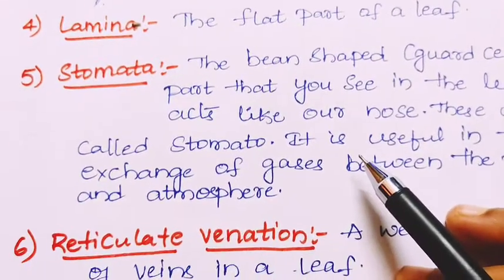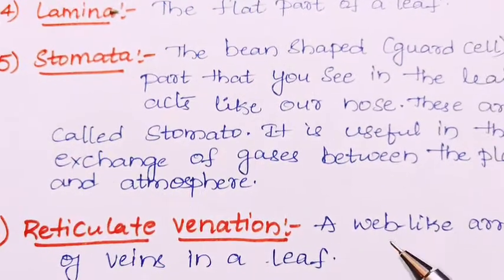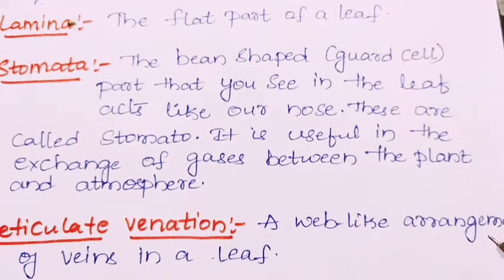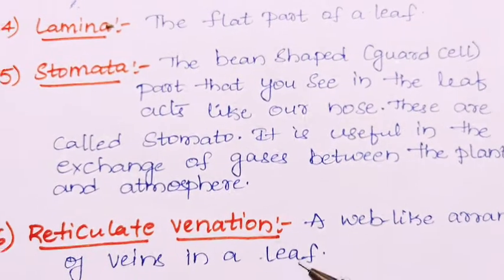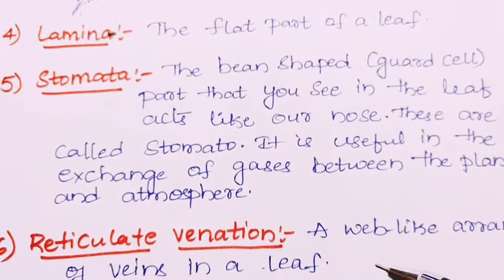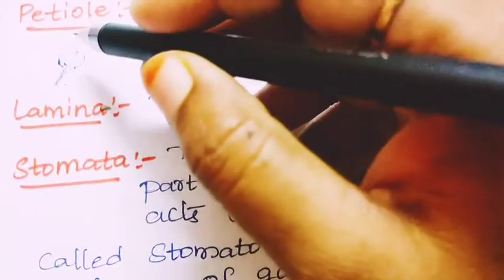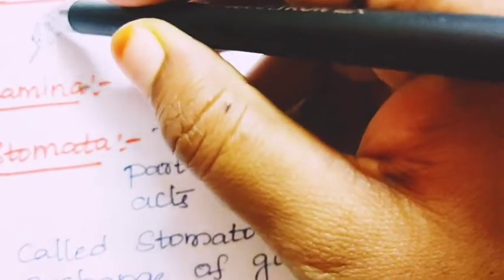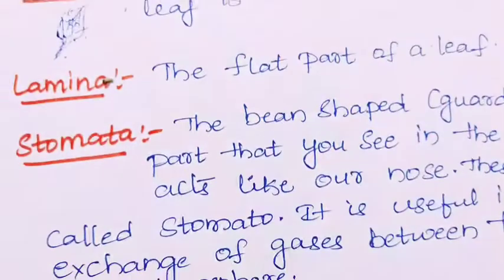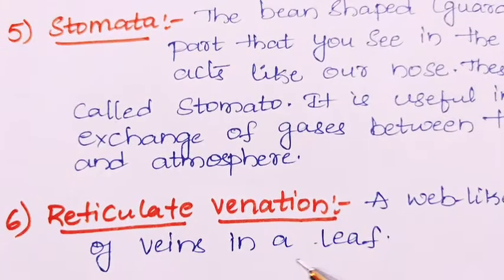Next: reticulate venation. Reticulate venation is a web-like arrangement of veins in a leaf. When you look at the leaf, the veins are arranged in a web-like manner, and this type of arrangement is called reticulate venation.